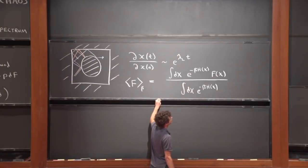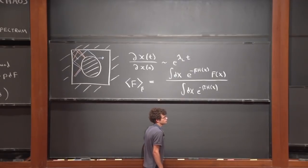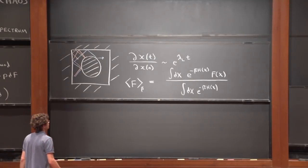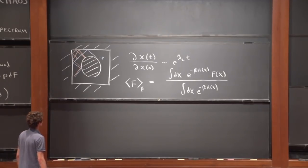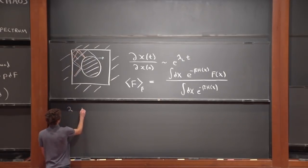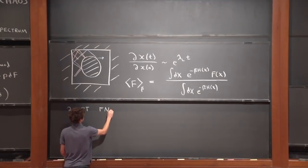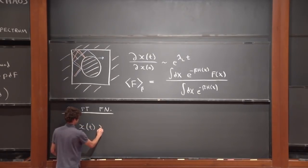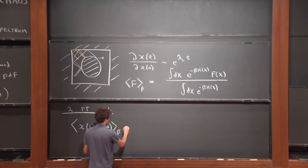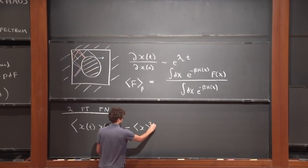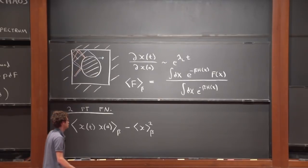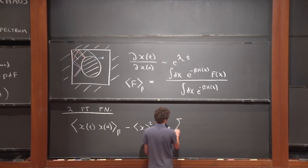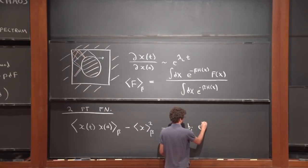In these lectures, we're going to pay a lot of attention to two different types of thermal expectation values that can be defined either in classical or quantum physics. The first is a two-point autocorrelation function in time, defined by taking some phase space coordinate x(t), x(0), and taking the connected thermal expectation value by subtracting off the disconnected term.